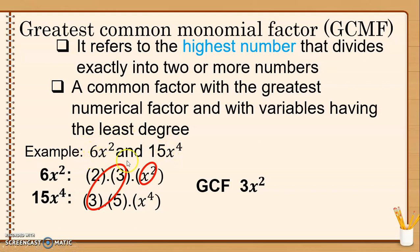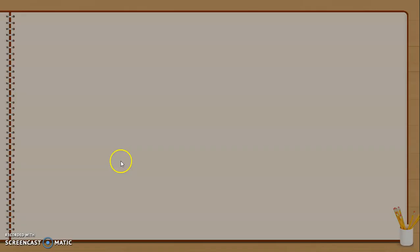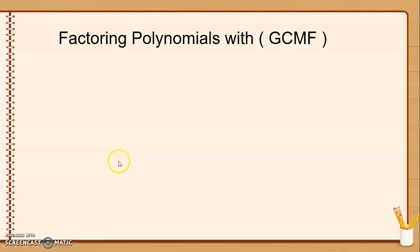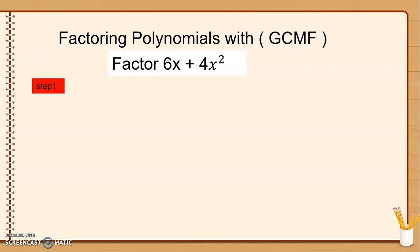It can be a number and variable, or a variable that can divide the two terms of our polynomials. Now we will try to factor polynomials using the GCMF or the greatest common monomial factor. We will factor 6x plus 4x squared.